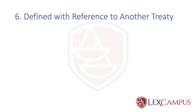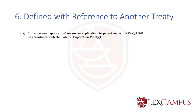The sixth type is defined with reference to a treaty — slightly different from being defined in a treaty. Section 2(1)(ia) states: 'international application means an application for patent made in accordance with the Patent Cooperation Treaty.' It doesn't say 'as defined in the PCT' — it says 'made in accordance with,' referencing an entire different system. The PCT operates as a distinct system within the Indian patent office, so this definition refers to another system.